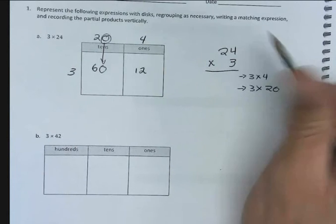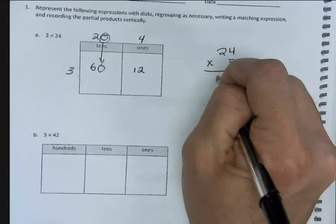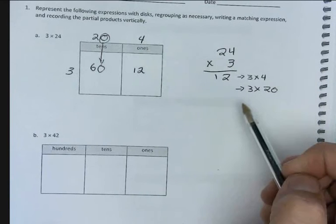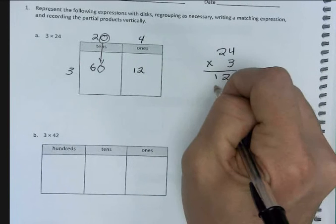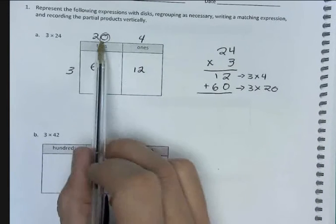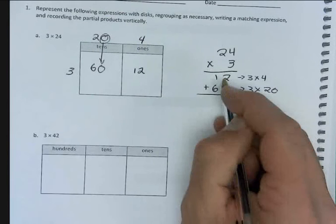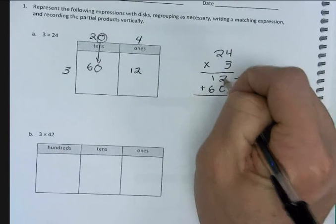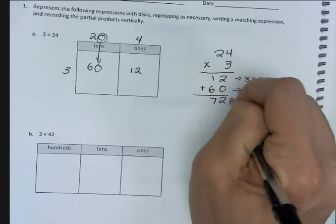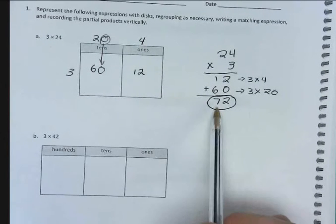First we have 3 times 4, then we have 3 times our two tens, which would be 20. We've already done the work here, so we just transfer our answers over. 3 times 4 is 12, lining up our ones place and tens place. 3 times 20 is 60. Because we took the 20 and 4 apart, we have to add them back together. 2 plus 0 is 2, 1 plus 6 is 7. So we circle our answer. Our product for 3 times 24 is 72.